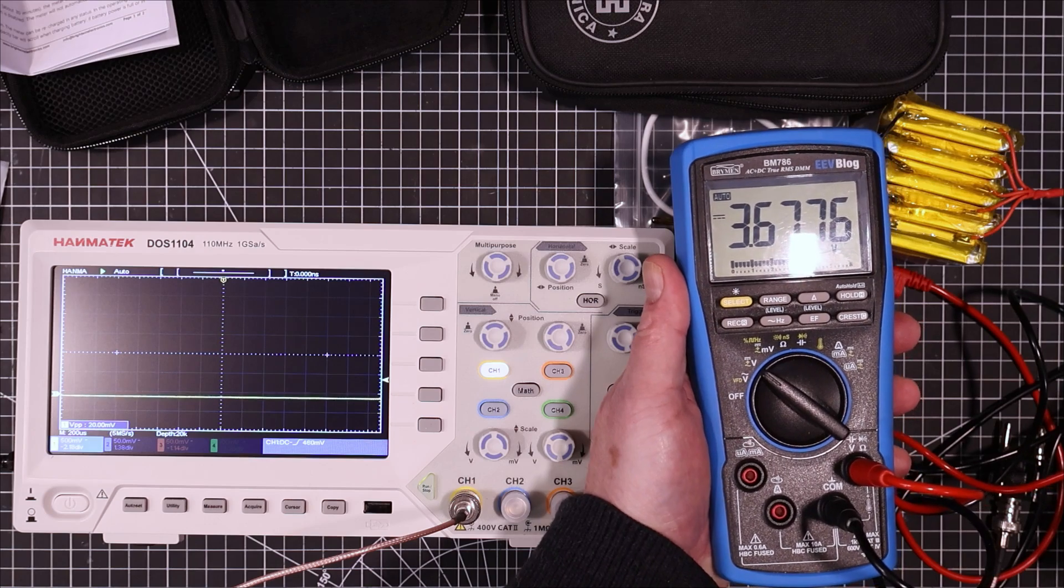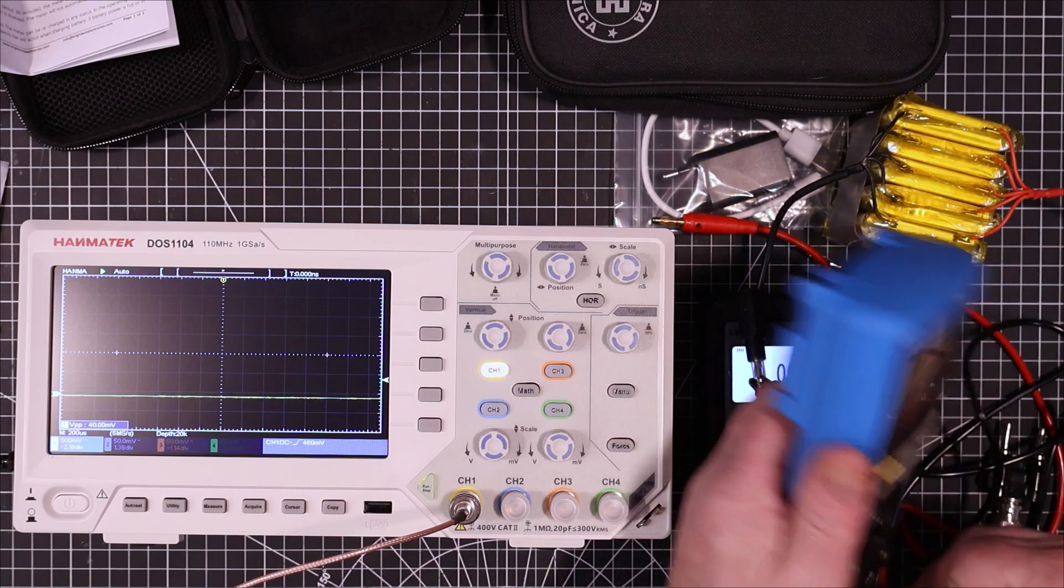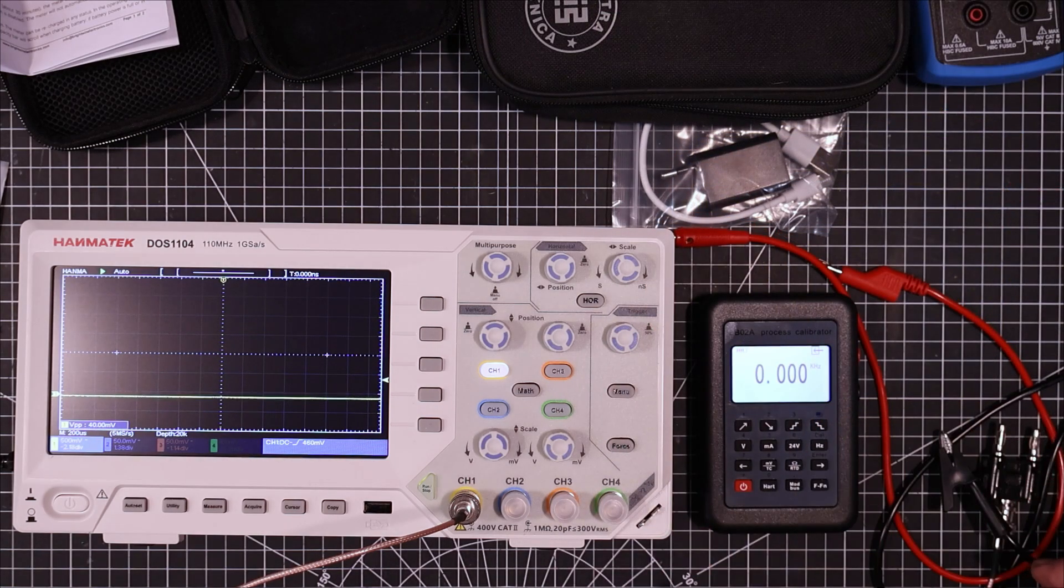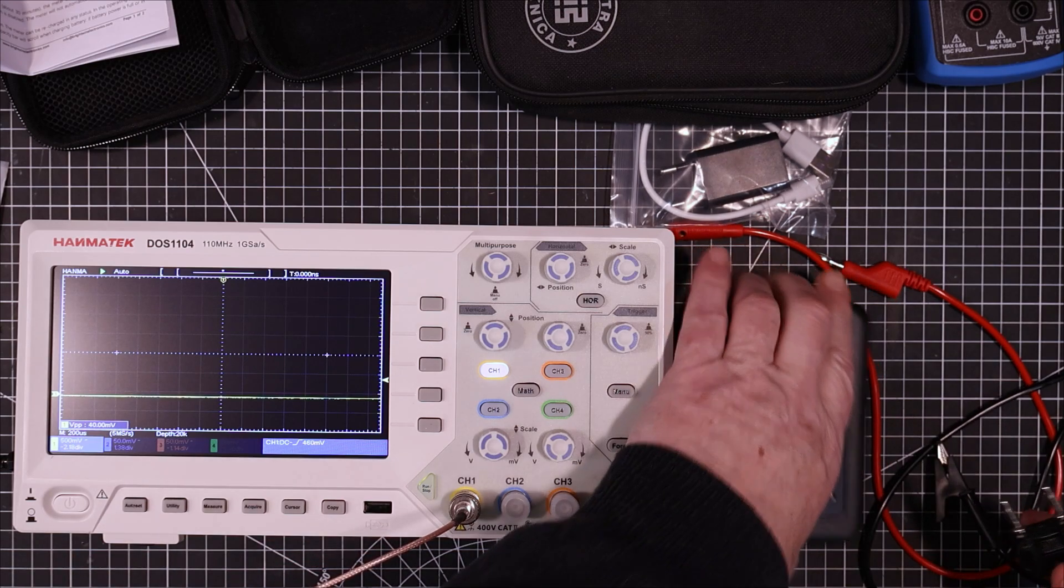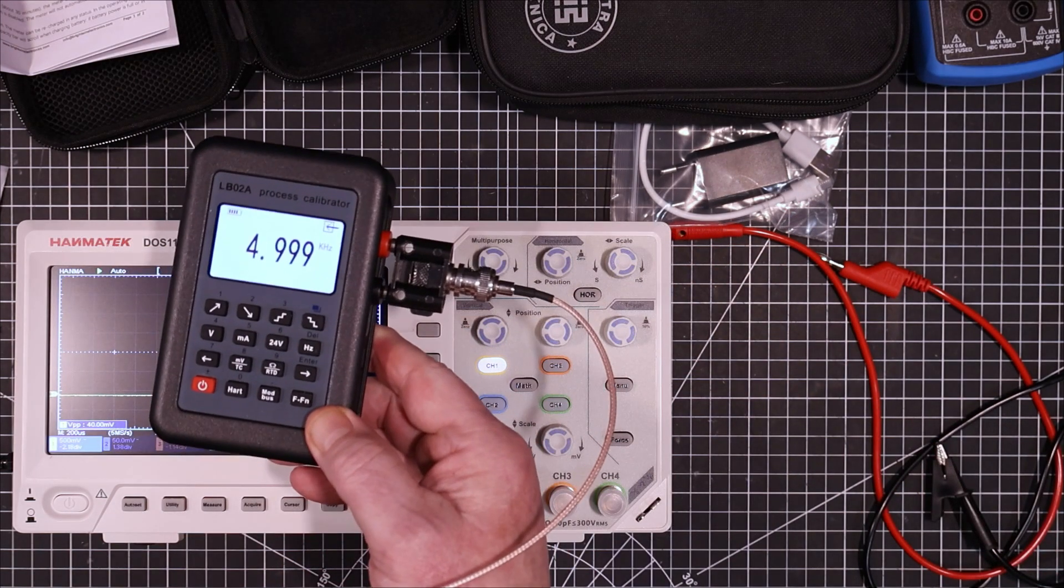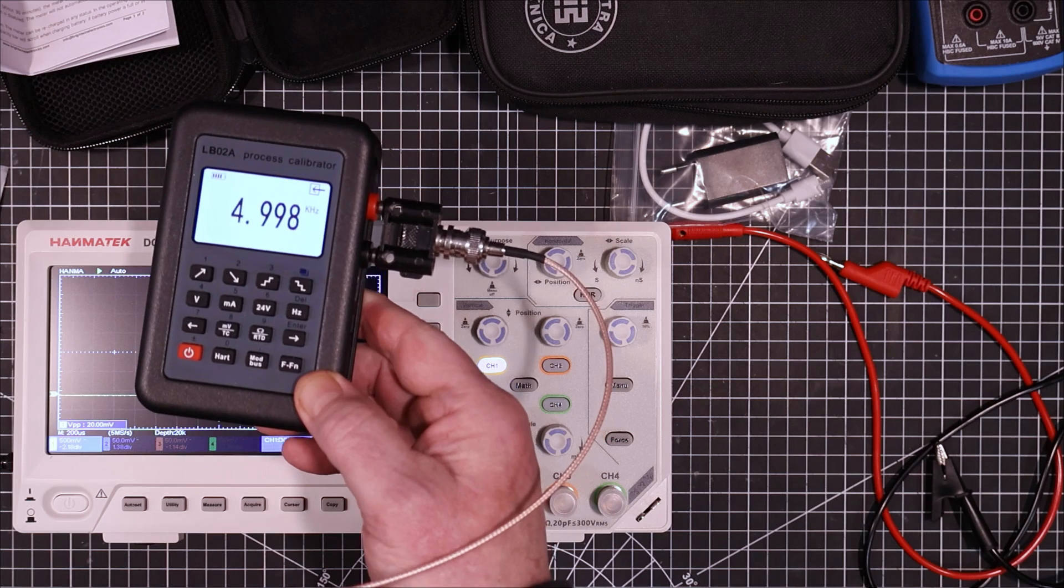3.776. So exactly the same. Let's go over to Hertz. We'll use my function generator to put a signal into it. Put in 2 volts here. So I'm going from 0 volts to 2 volts.